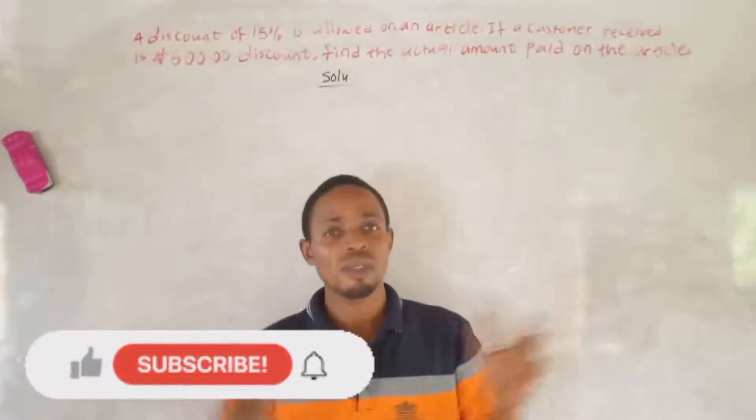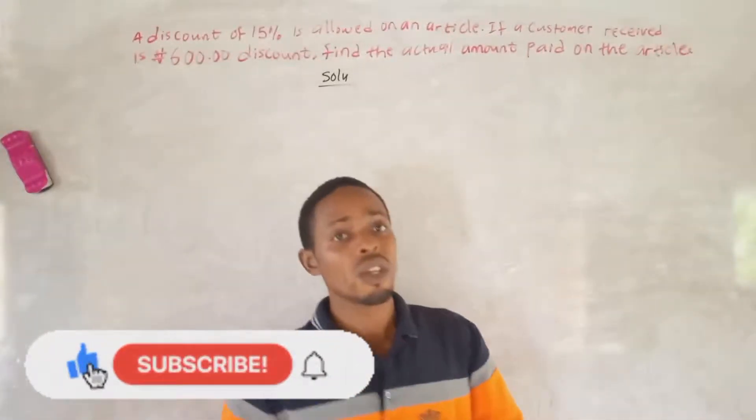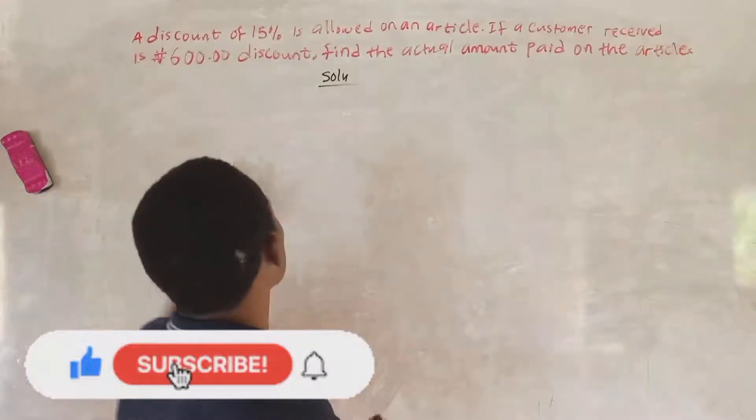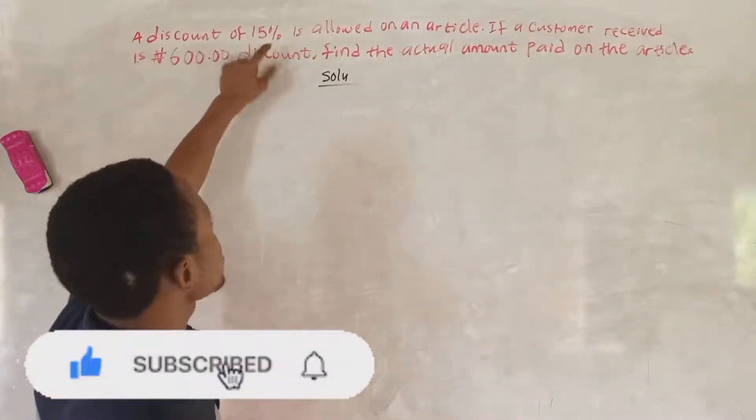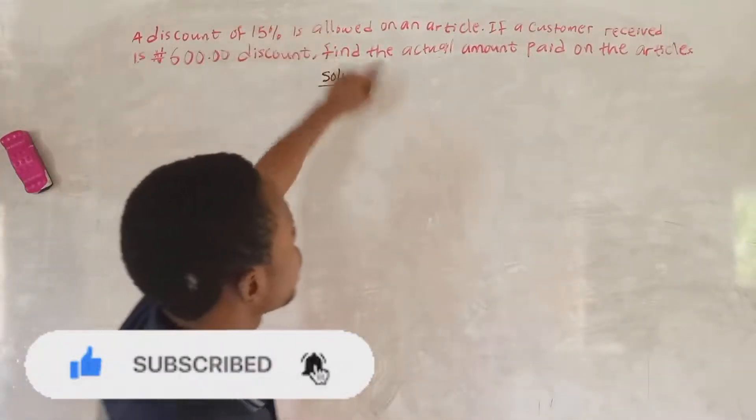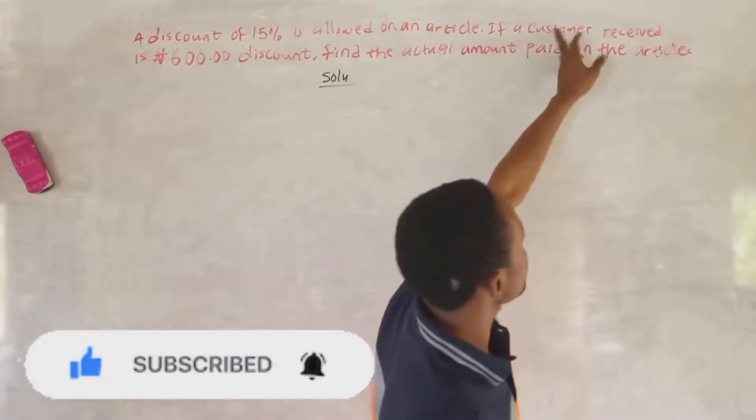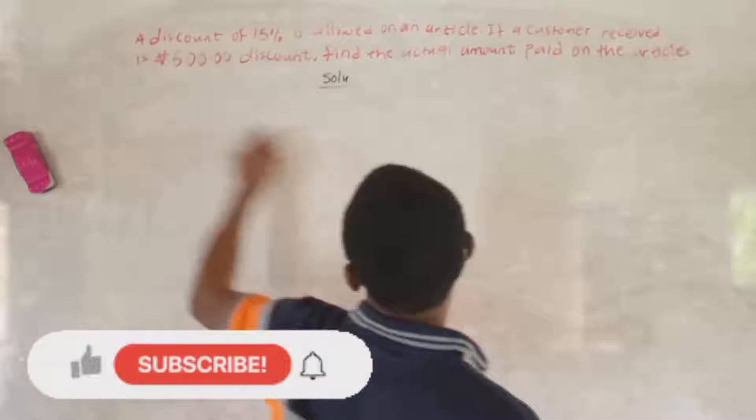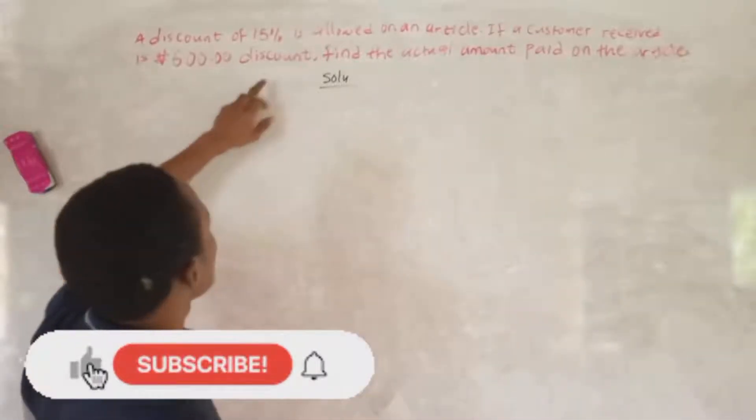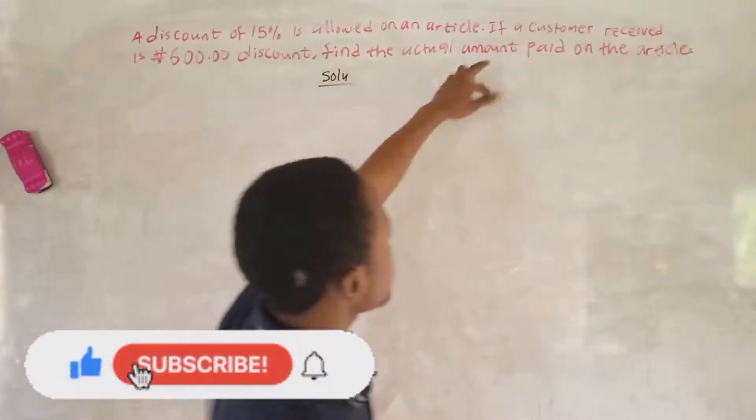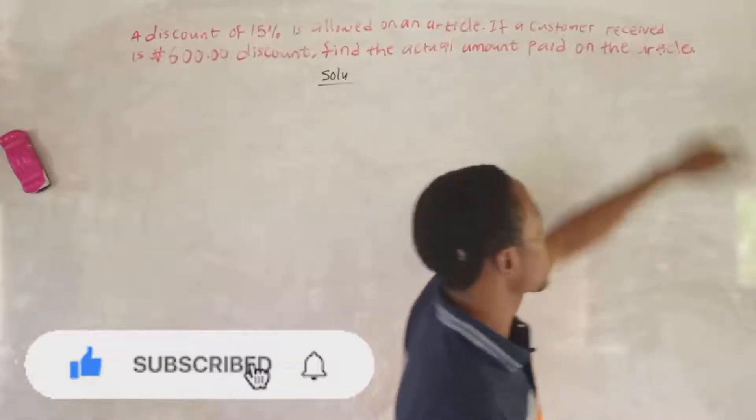Welcome friends, welcome to today's LifePay Necro Question. So look at this questionnaire. A discount of 15% is allowed on an article. First of all, if a customer receives seasonal discounts, find the amount paid on the article.